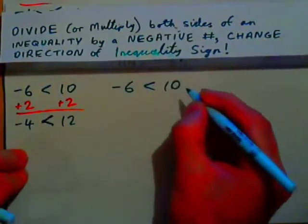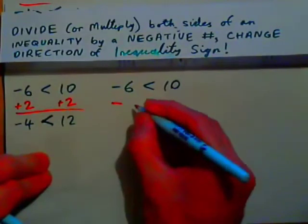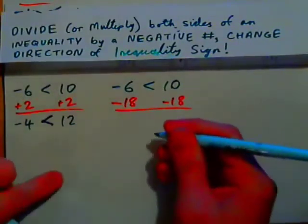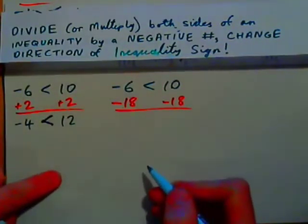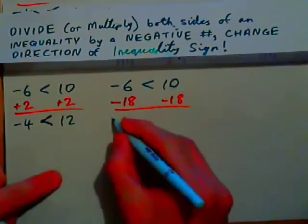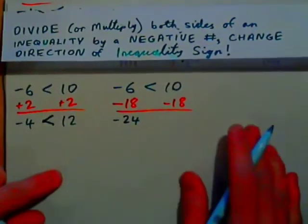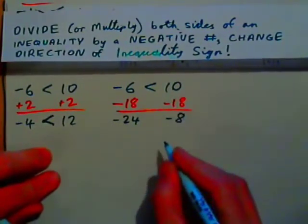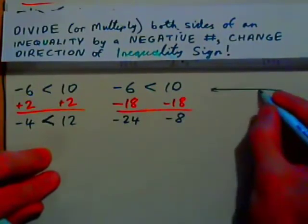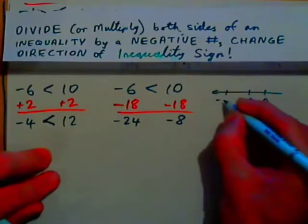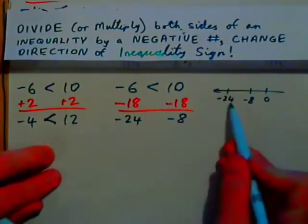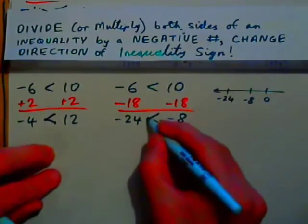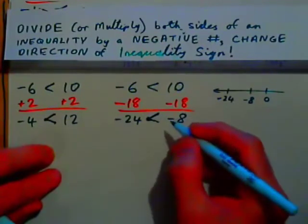Negative 6 is less than 10. What if we subtract 18 from both sides? On the left we get negative 24; on the right, 10 minus 18 gives negative 8. Thinking about a number line: here's 0, here's negative 8, here's negative 24. Negative 24 is further to the left, so it's lesser. The inequality direction is preserved — negative 24 is less than negative 8.